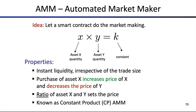How can we perform market making through a mathematical formula programmable into a smart contract? The most common way is the constant product formula: x * y = k. We have an asset X with a certain quantity and an asset Y with a certain quantity, and the product of these two must remain constant. The constant K only changes when additional liquidity is added to the pool. As long as we simply trade X for Y or Y for X, the constant K remains constant.